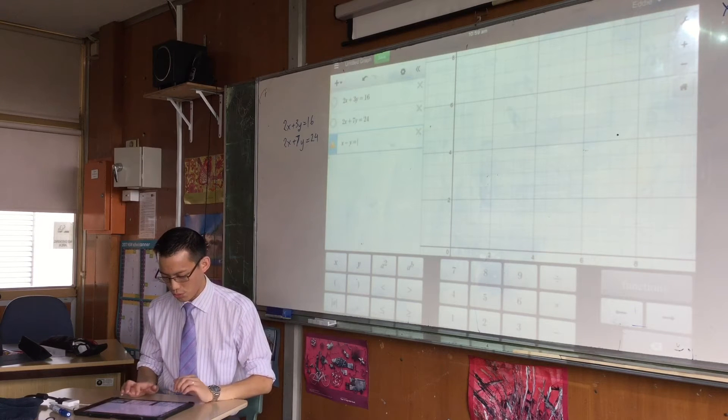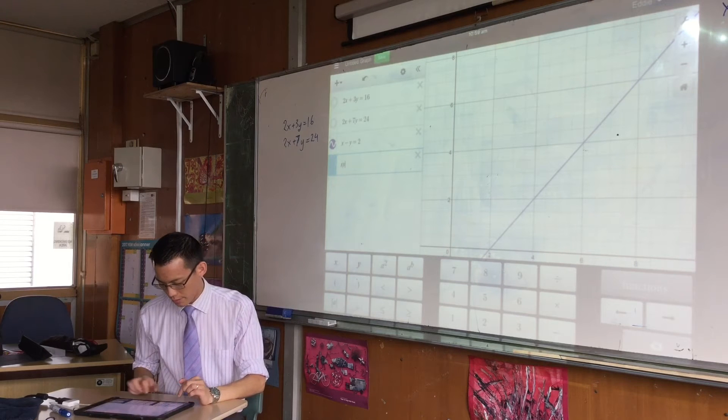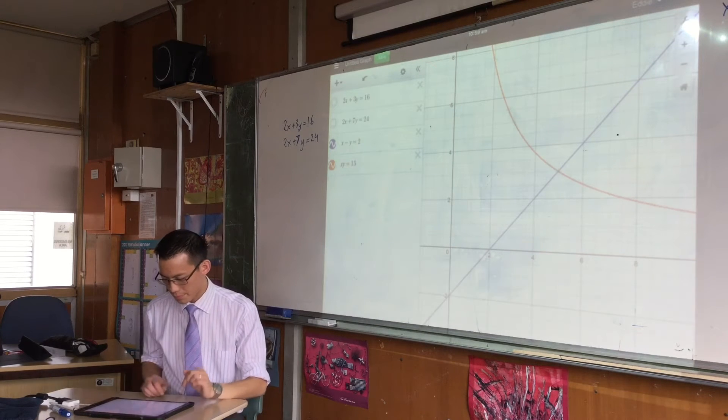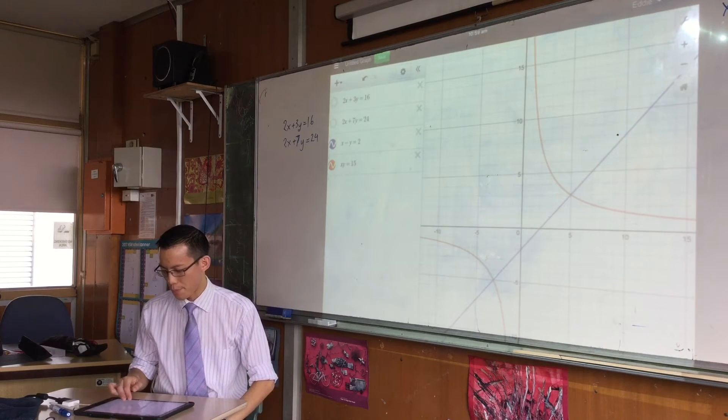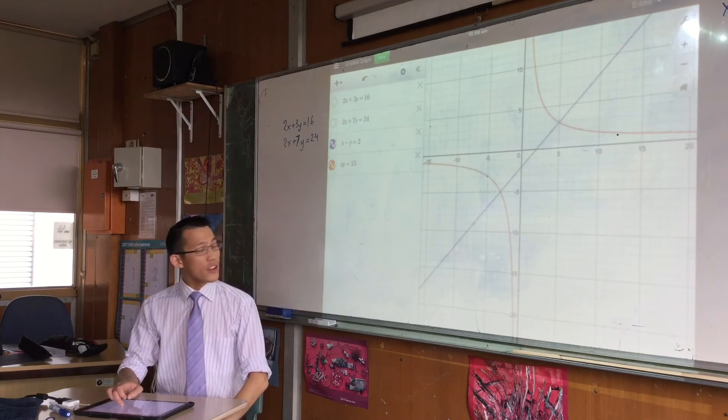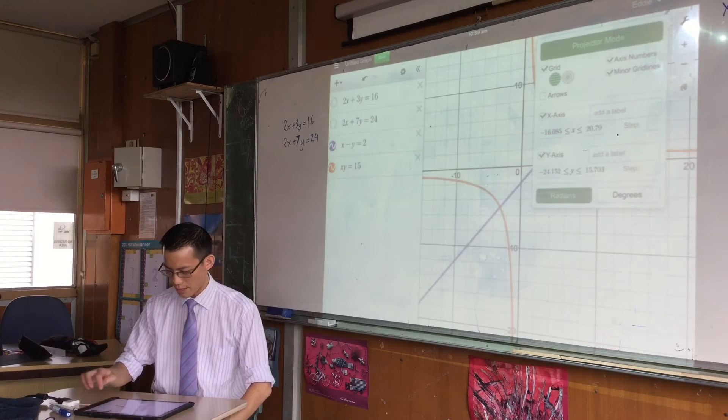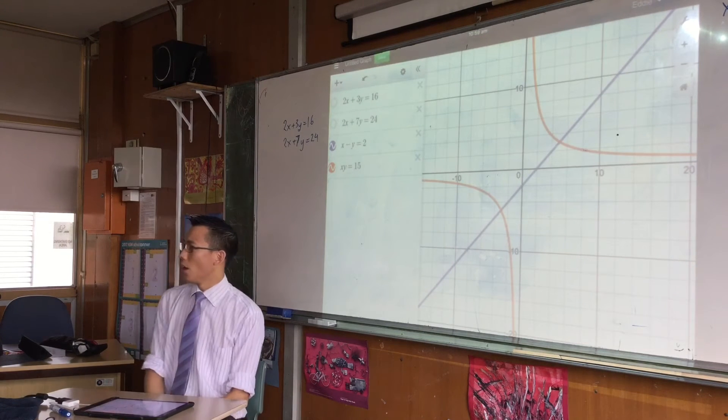I don't want them. I'm going to graph each of these one at a time: x minus y equals 2 and xy equals 15, and then zoom out appropriately.